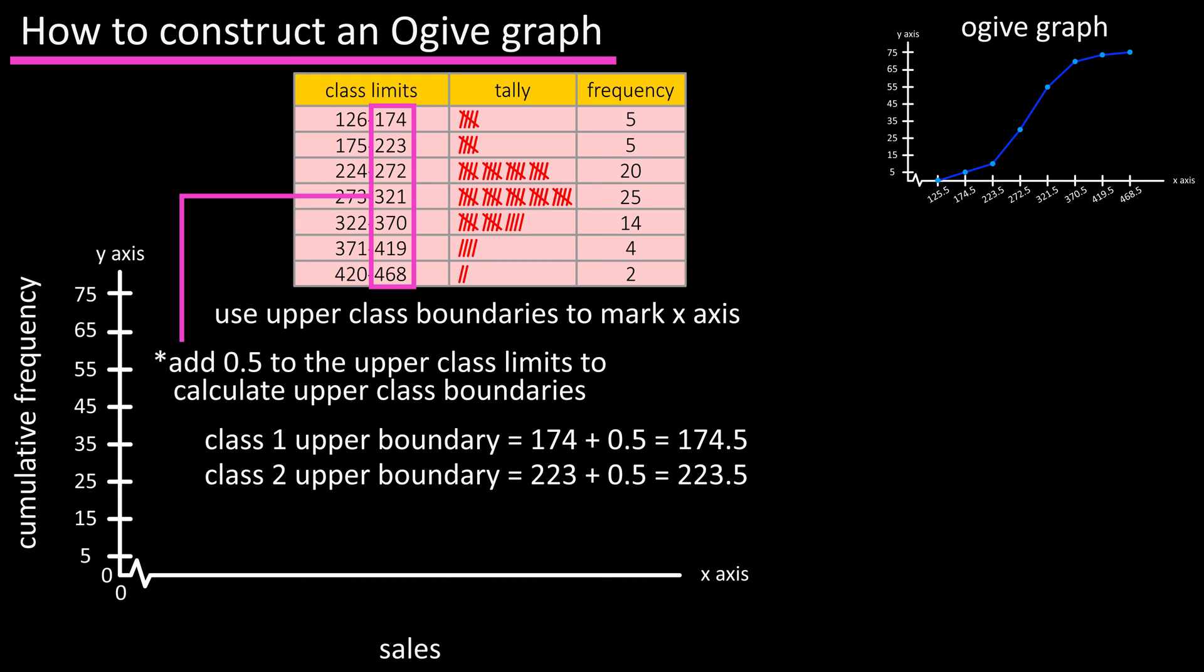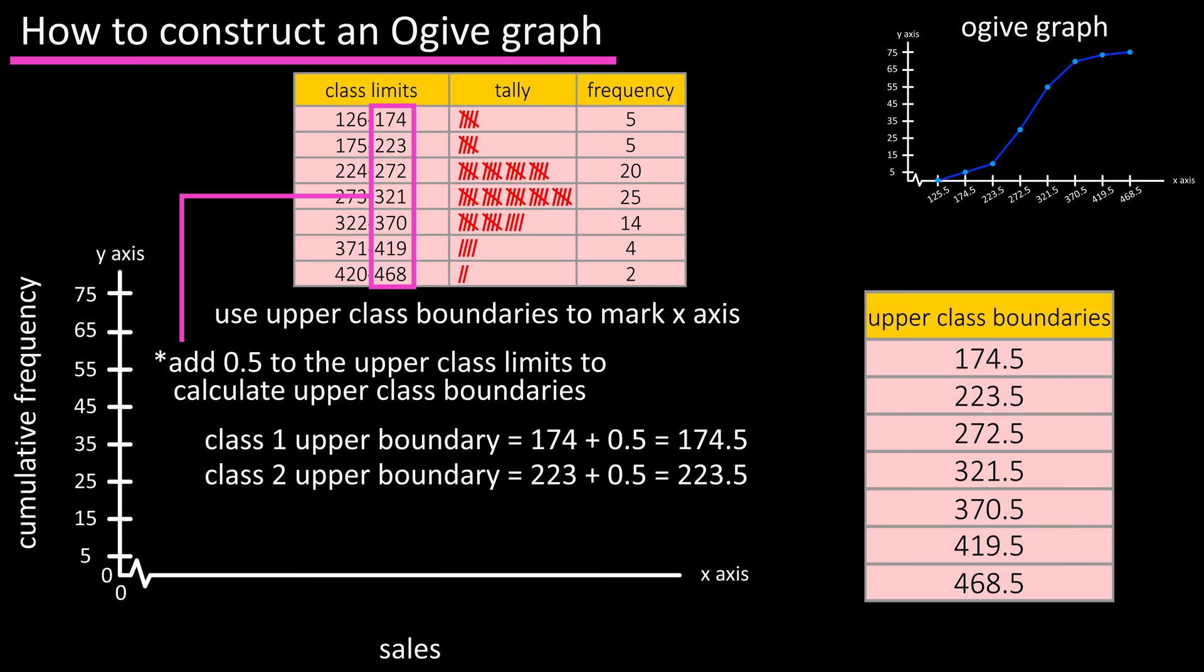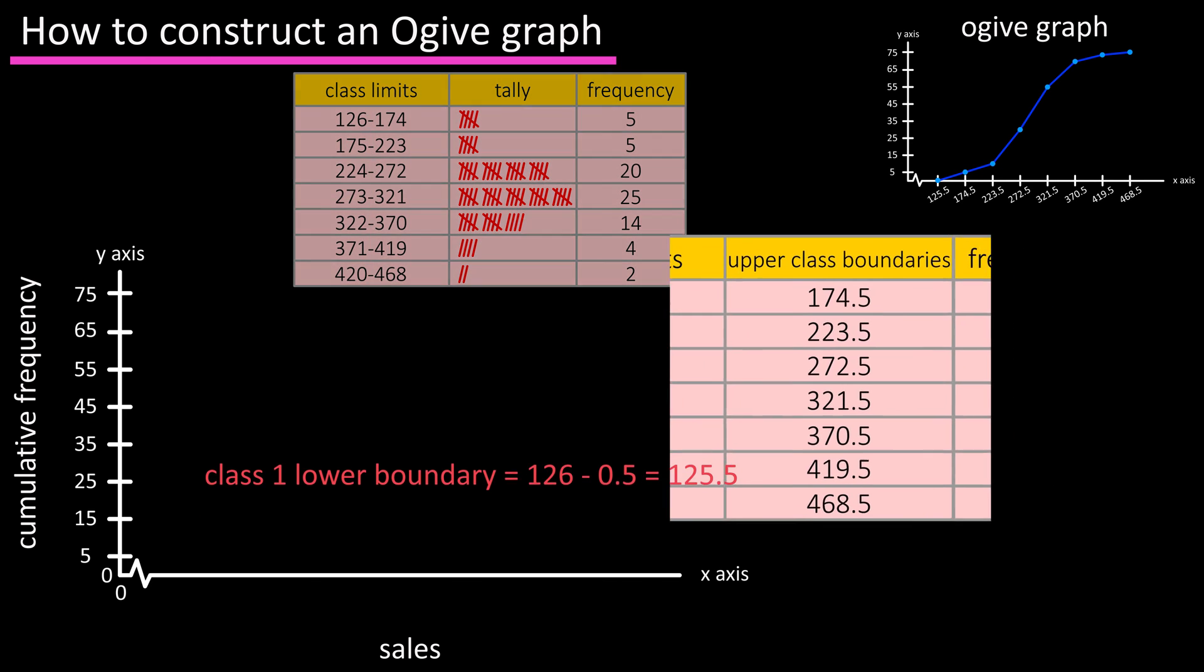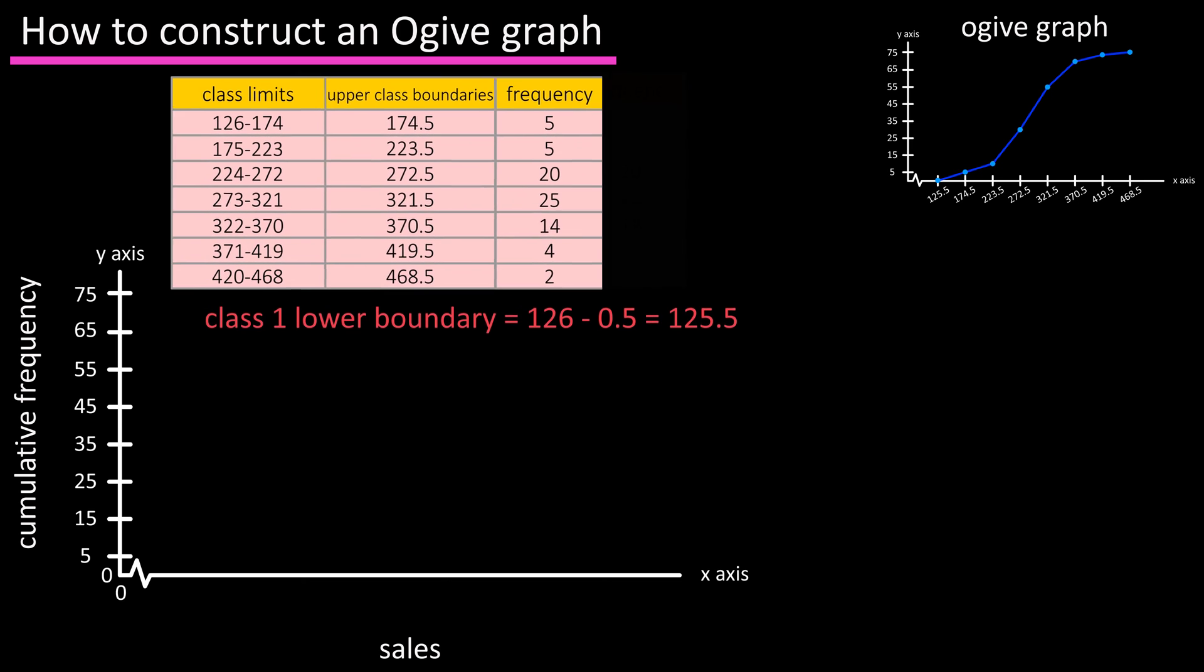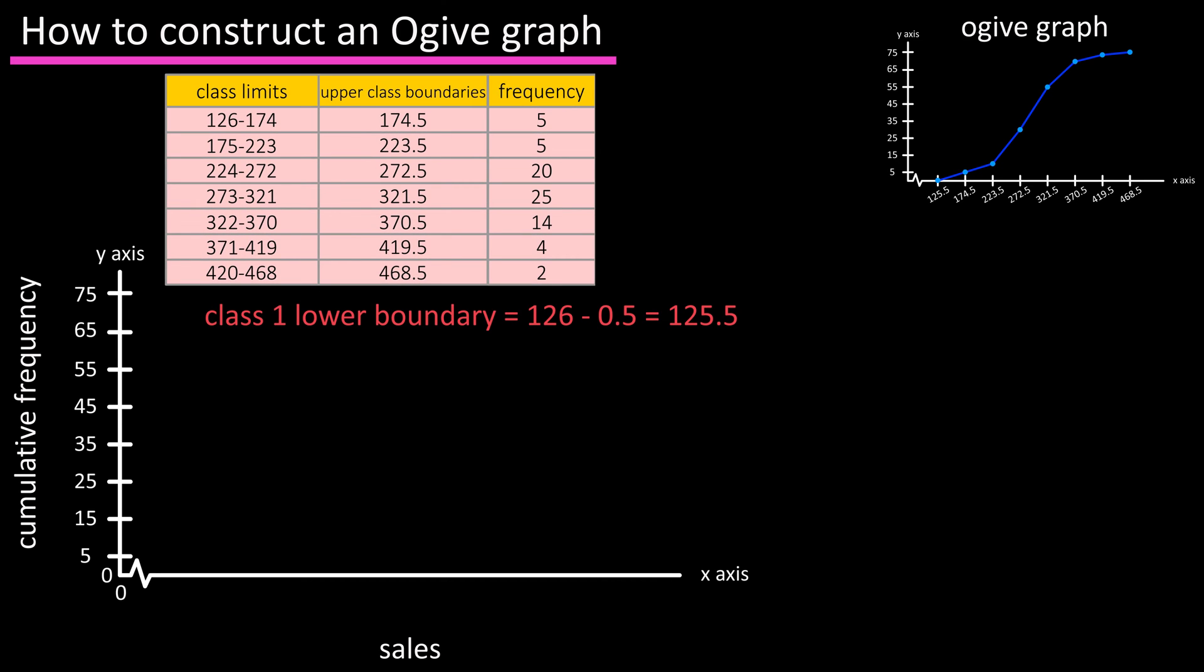And we continue the rest for the remaining classes as you see in this table here. One other thing that we're going to do is calculate the lower class boundary for class one. For this we're going to subtract 0.5 from the lower class limit of class one, 126, to get 125.5. Now that we have the upper class boundaries and the lower class boundary for the first class, we can label the x-axis.